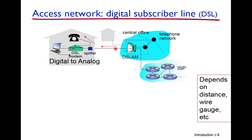DSL is a dedicated connection — each home has a dedicated line connecting it to a central office. Since the telephone line supports analog signals for voice, a DSL modem converts digital data to analog signal for transmission. At the central office, there is a device called the DSL Access Multiplexer (DSLAM).